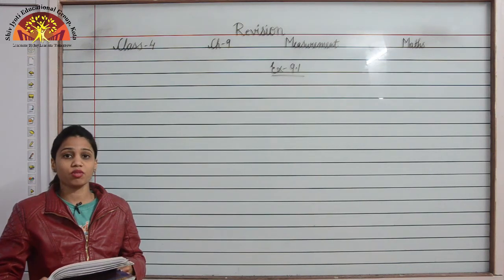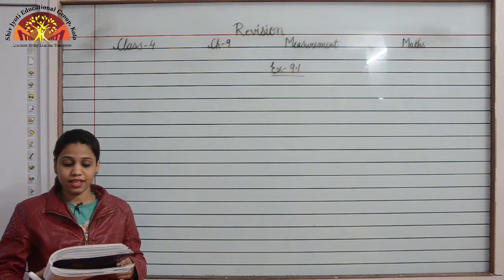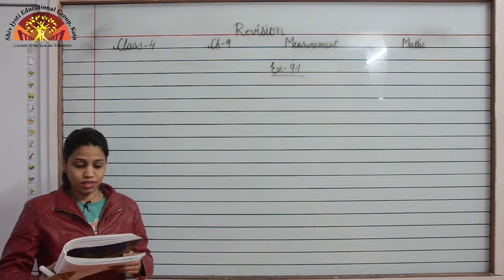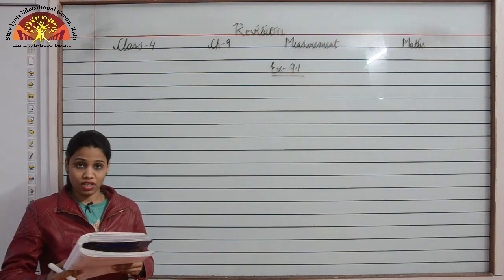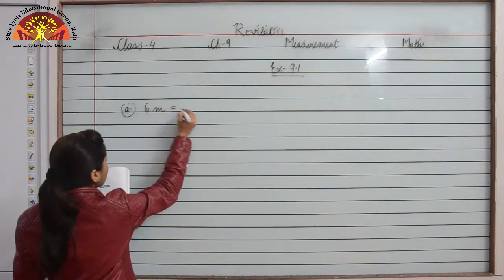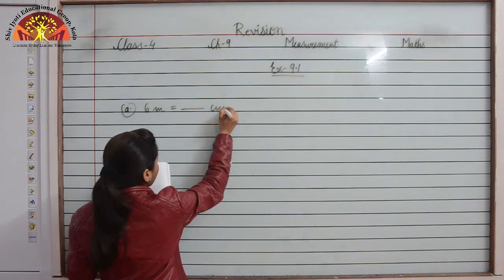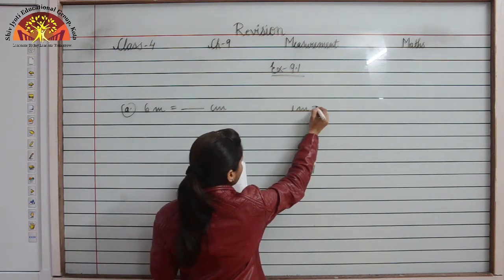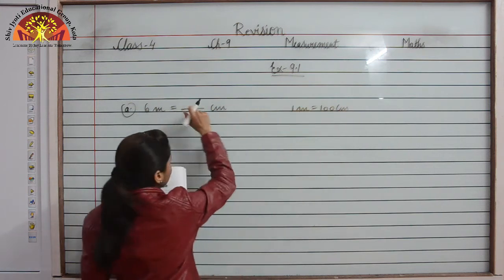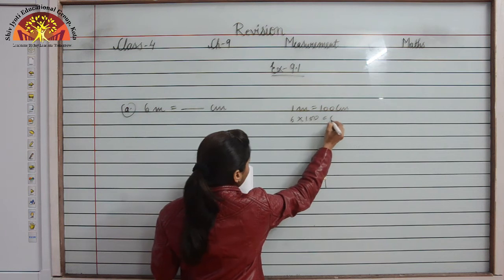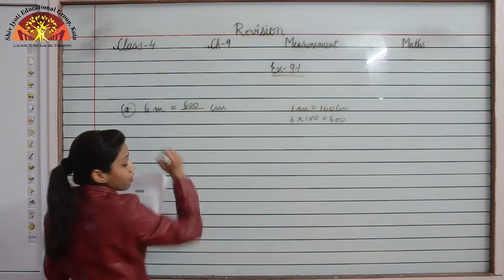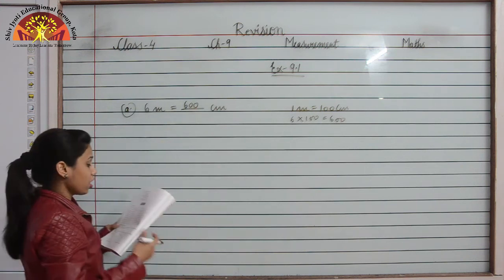Students, please open page number 124 of your book, that is exercise 9.1. Now let us do fill in the blanks. Part a: 6 meter is equal to dash centimeter. As you all know, 1 meter is equal to 100 centimeter, therefore 6 meter will be 6 multiplied by 100, that is 600. Hence 6 meter is equal to 600 centimeter.